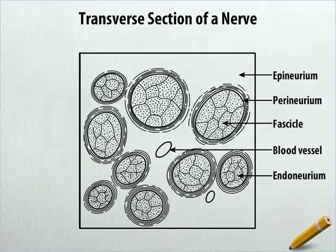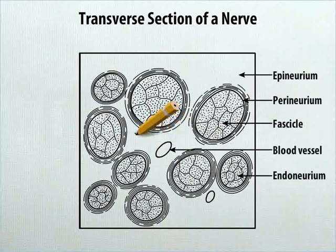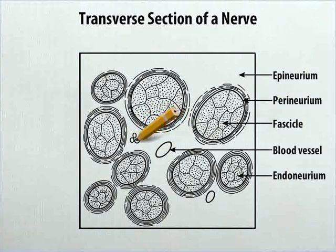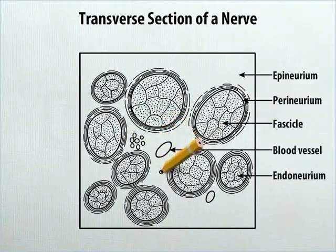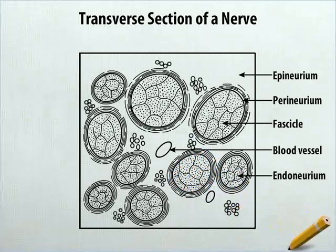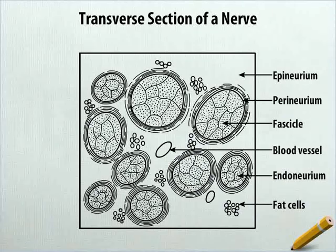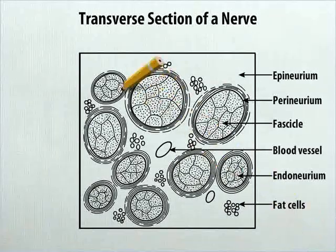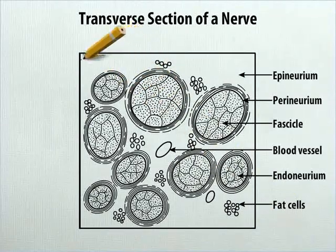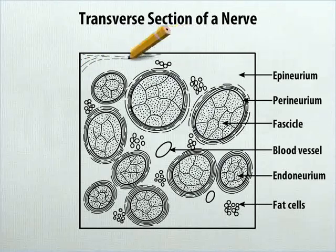In the empty space of the epineurium, draw some clusters of small circles at these positions and label any one cluster as fat cells. Finally, in the epineurium, draw many arcs of different sizes and shade all the structures.